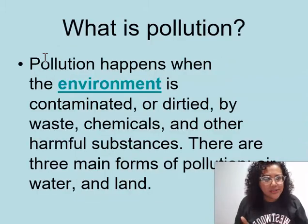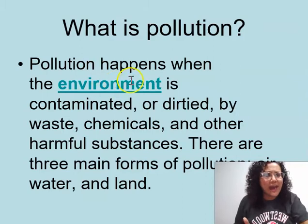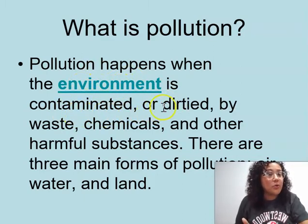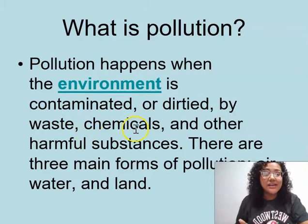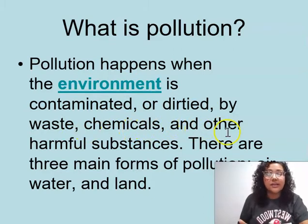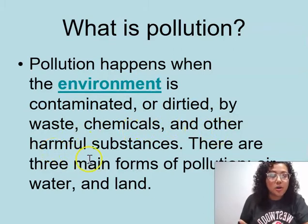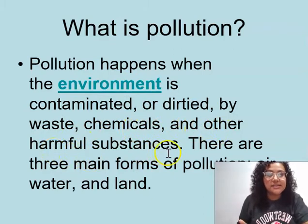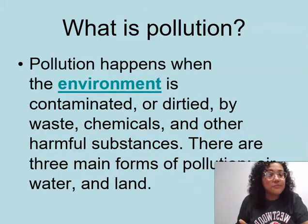What is pollution? Pollution happens when the environment is contaminated or dirtied by waste, chemicals, and other harmful substances. There are three main forms of pollution: air, water, and land.